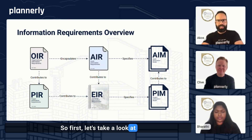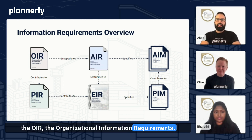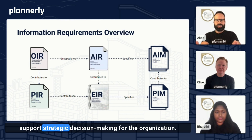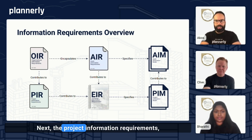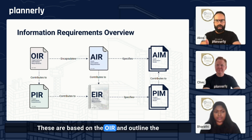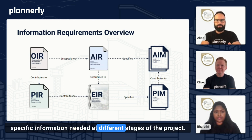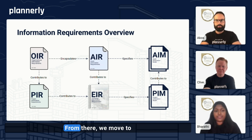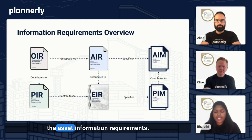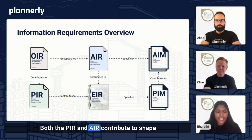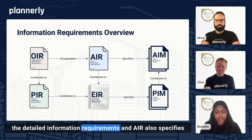Let's take a look at the OIR — the organizational information requirements. These are set by the appointing party and define the high-level information needed to support strategic decision making for the organization. Next, the project information requirements, or PIR, come into play. These are based on the OIR and outline the specific information needed at different stages of the project, making sure the project's operational goals are met. From there, we move to the asset information requirements, which define the data needed to manage and operate the asset over its lifecycle. Both the PIR and AIR contribute to shaping the detailed information requirements.